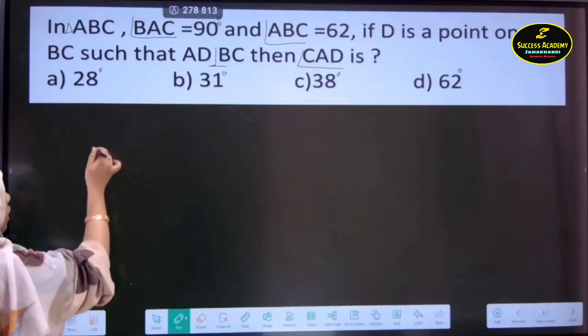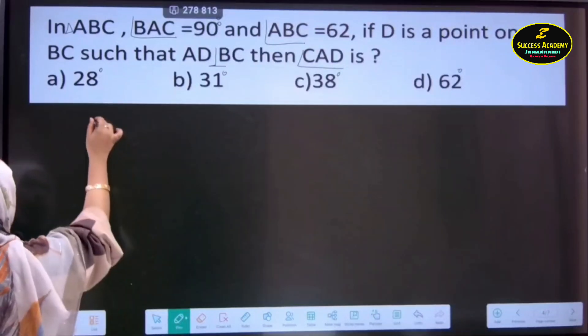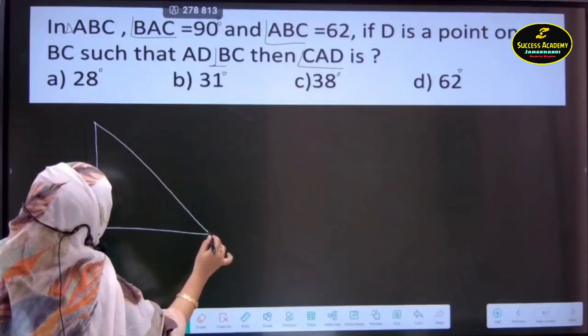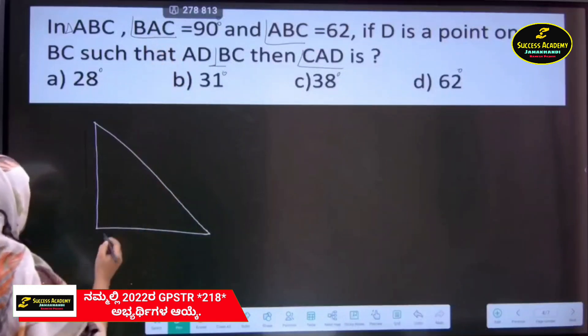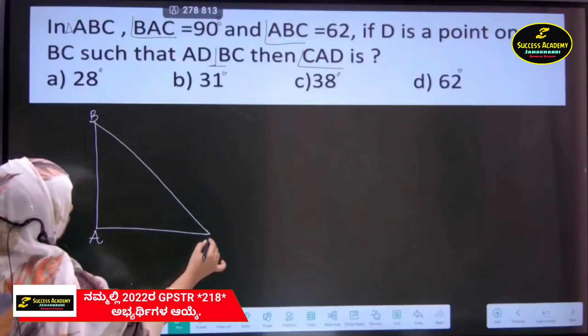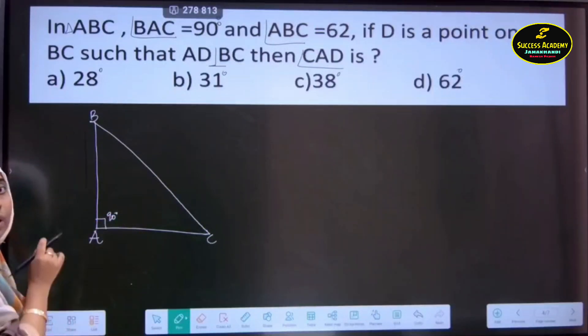So, first of all, let us draw a triangle. Angle 90 degrees is making at a point A. Means this must be kept A. So, triangle it will become ABC like this making an angle of 90 degrees at a point at a vertex A.